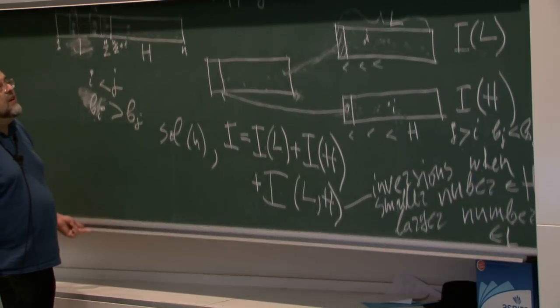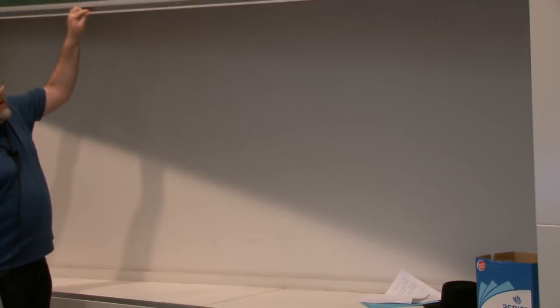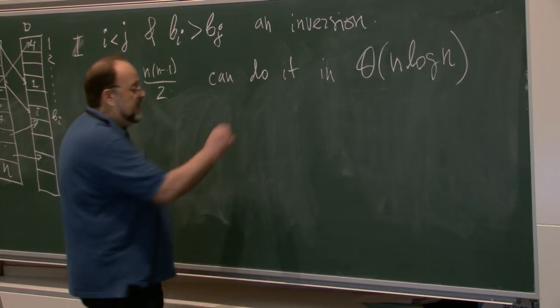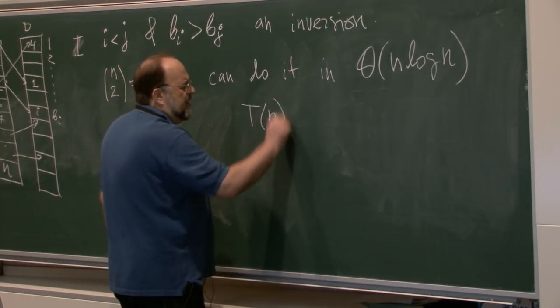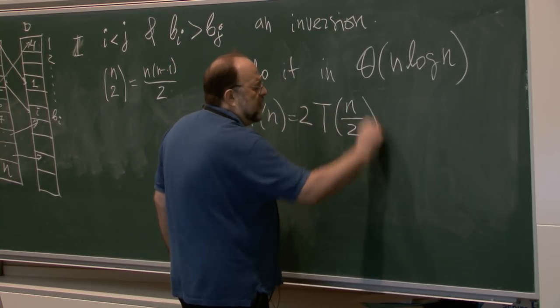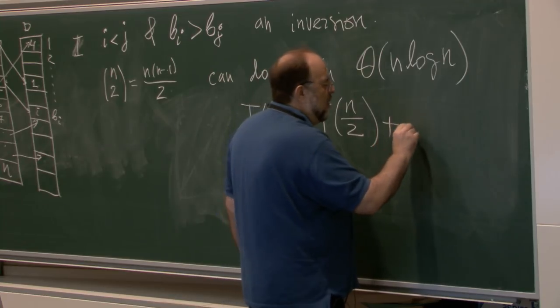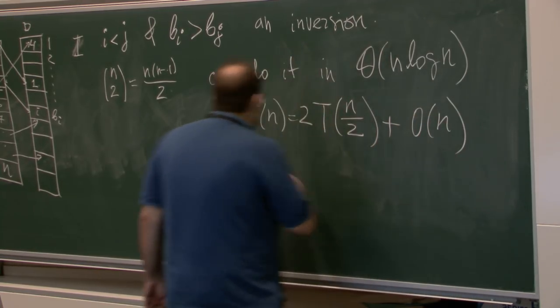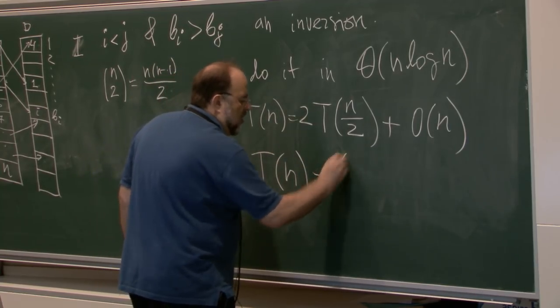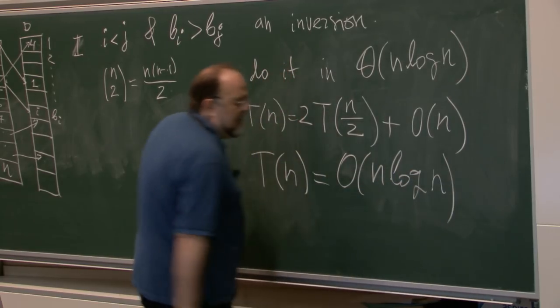Okay so what is the run time? Obviously the same recurrence holds, because T of N will be still equal to 2 times T of N over 2, plus the merging and counting is all doable in O of N, and so T of N will be O of N log N.